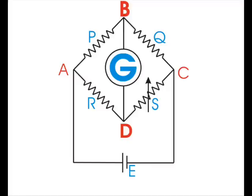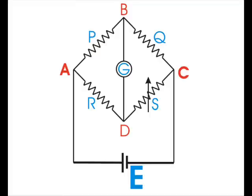A sensitive galvanometer G is connected across the terminals B and D. The battery is connected across the other two terminals A and C.